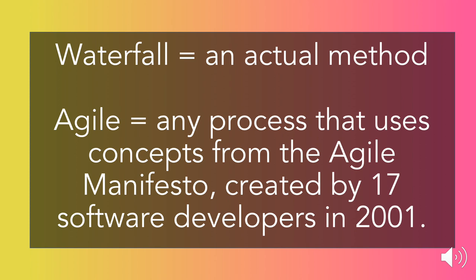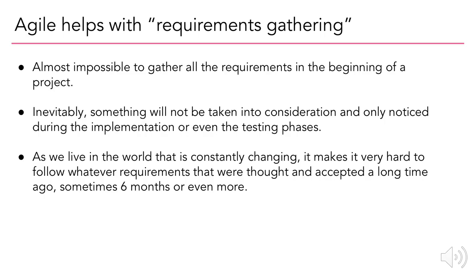At this point, I should settle a discrepancy. The Waterfall method is an actual method — it's the technical term for that way of producing software — whereas Agile is actually just any process that uses concepts from the Agile Manifesto, which incorporates all these pieces we've been discussing, from 2001. So Agile is not an actual process to deliver software, but it is the umbrella term, and there are more specific terms for the actual processes that teams might use. Agile helps with requirements gathering, because it's almost impossible to know all requirements, challenges, or constraints at the beginning of a project, since something will inevitably only be discovered later on.